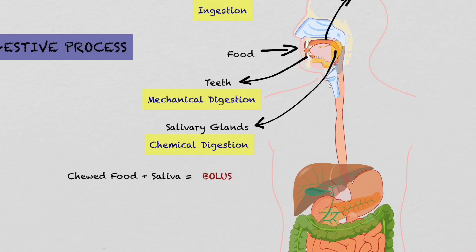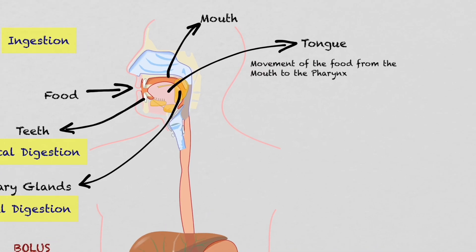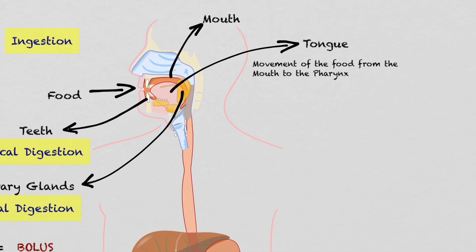The third accessory structure of the mouth is the tongue. The tongue transports the bolus from the mouth to the pharynx. The bolus is then transported from the pharynx to the esophagus.